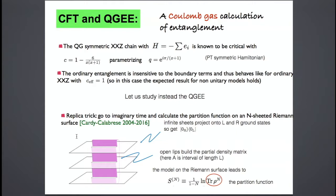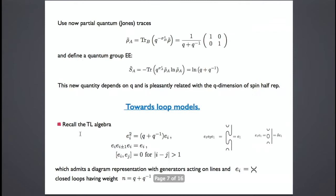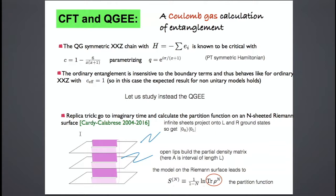Let's take a Hamiltonian with many Temperley-Lieb generators. It's known this Hamiltonian is critical, PT-symmetric with real eigenvalues, and has central charge C = 1 − 6/(x(x+1)), parameterizing the anisotropy q = e^{iπ/(x+1)}. The ordinary entanglement, if I took a large chain with a segment of length L, would not depend on boundary terms. When you add all the e_i terms, the extra (q − q^{−1}) pieces from neighboring sites cancel except for the first and last term. So in fact the effective central charge for this system should be 1. But now let's study instead the quantum group entanglement entropy.